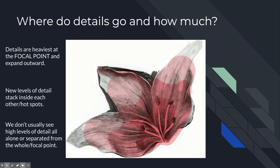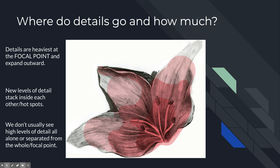Where do details go and how much? Every art piece should have a focal point — the main area you want your viewer to look — and that's where you concentrate all your details. As you fan out from the focal point, you reduce detail amount. Every new layer of detail stacks on top of the others: light out here, medium here, heavy here, heaviest at the focal point. We don't usually see high levels of detail far from the focal point.